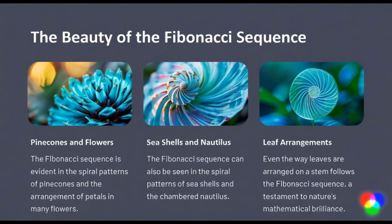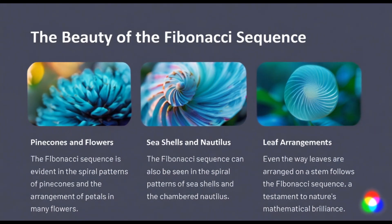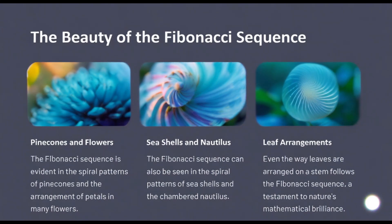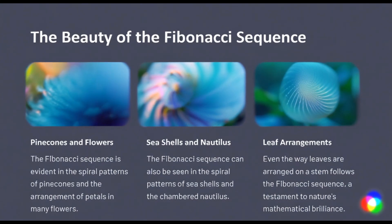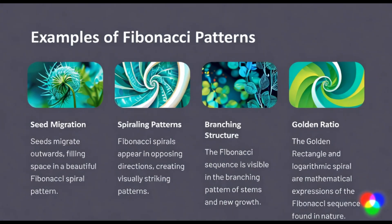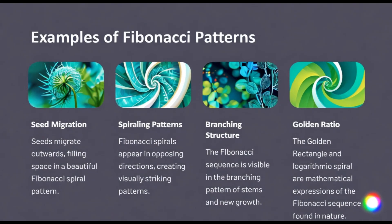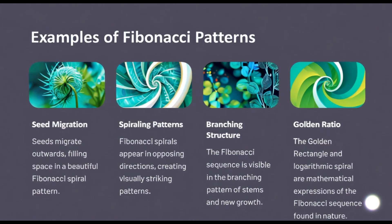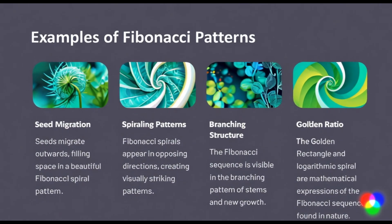The Fibonacci sequence is one of the most famous examples of mathematics in nature. From the arrangement of leaves to the spirals of seashells, the branching of trees, the arrangement of seeds in a sunflower, and even the spiral arms of galaxies, this sequence reveals the inherent mathematical order in the natural world.